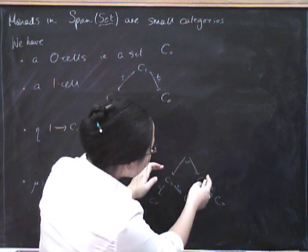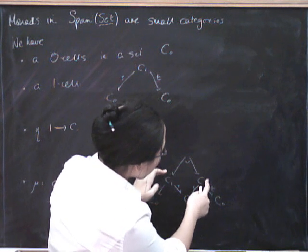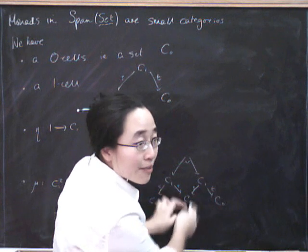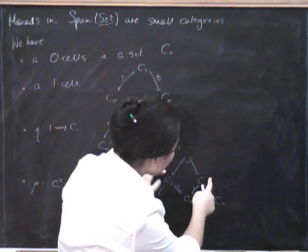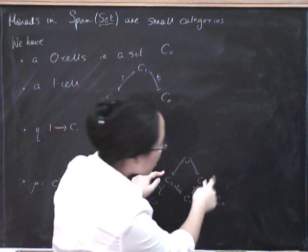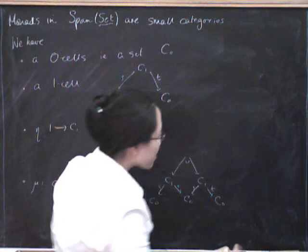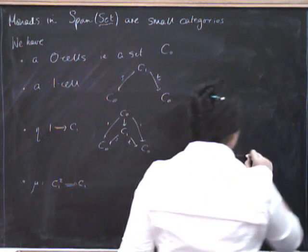So what on earth is this pullback? Well, look, a pullback in set is a pair of things, one in here and one in here, such that they get mapped to the same place down here. So it's a morphism and another morphism where the target of this morphism equals the source of this morphism. So it's just a composable pair.